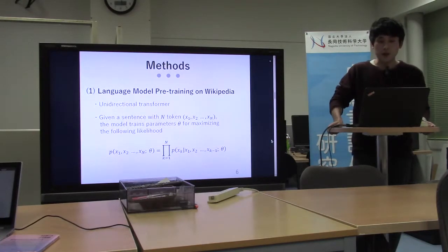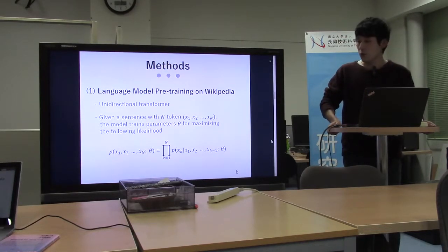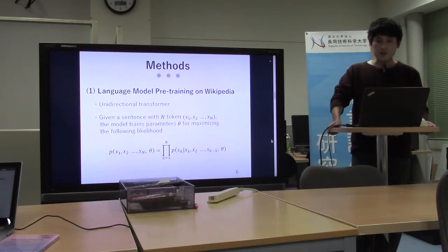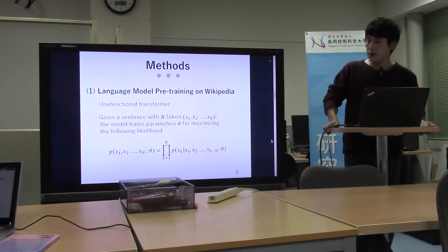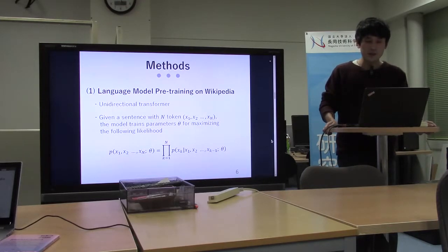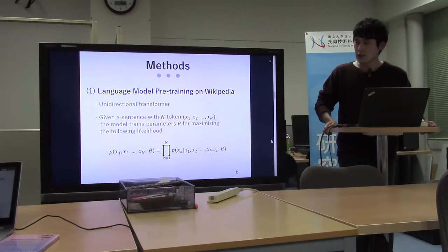As a first step, we trained a language model on Japanese Wikipedia. We use a unidirectional transformer-based language model. Given a sentence with tokens, the model trains the parameters for maximizing the likelihood. It is a next token prediction task, like GPT. We use Japanese Wikipedia, which has 640 million tokens.